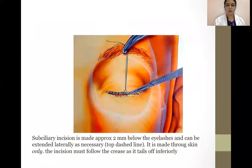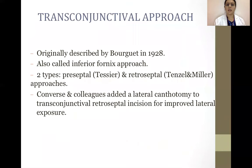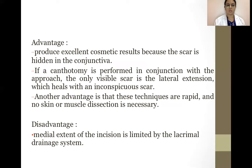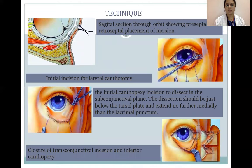The lower eyelid approach uses a subciliary incision made approximately two mm below the eyelashes, extended laterally as necessary, through the skin only, following the crease as it tails off. The transconjunctival approach, also called the inferior fornix approach, has two types: preseptal and retroseptal. It produces excellent cosmetic results because the scar is hidden in the conjunctiva. If a canthotomy is performed in conjunction, the only visible scar is a lateral extension which heals inconspicuously. These techniques are also relatively rapid. A disadvantage is that the medial extent of the incision is limited by the lacrimal drainage system.